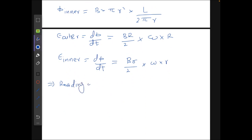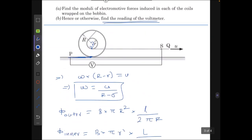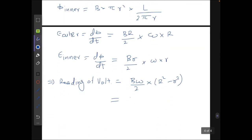Reading of voltmeter will be equals to E outer minus E inner, which can be given as B omega by 2 multiplied by capital R square minus small r square. Substituting here the value of omega, which is u over capital R minus small r, we get Bu by 2 times capital R plus small r. This is the final answer.